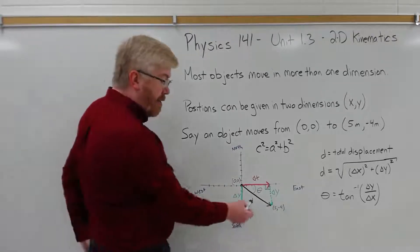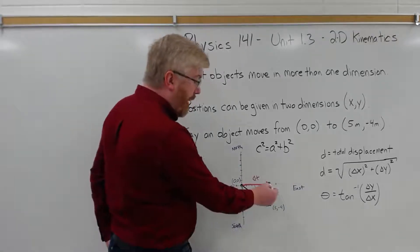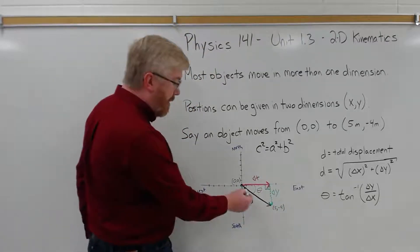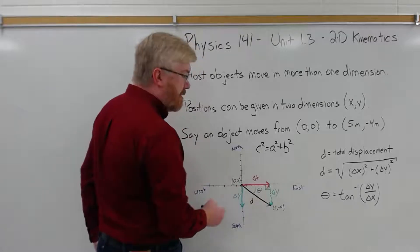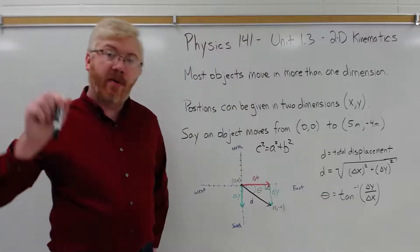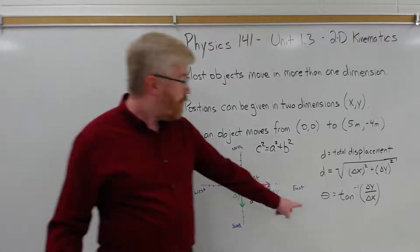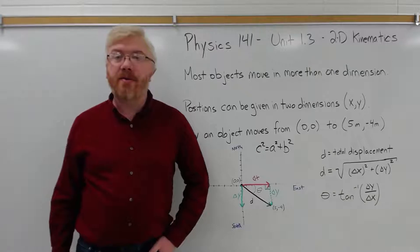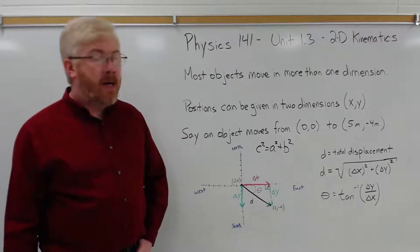Well, I know what the hypotenuse is. But I know the opposite side of this angle theta is delta y, y displacement. The adjacent side is x. So I can use the tangent function. Tangent is opposite over adjacent. So the inverse tangent function, I can use that to solve for theta.